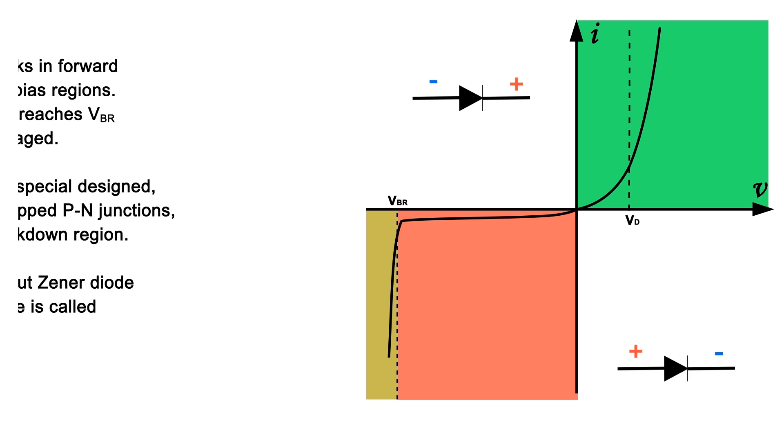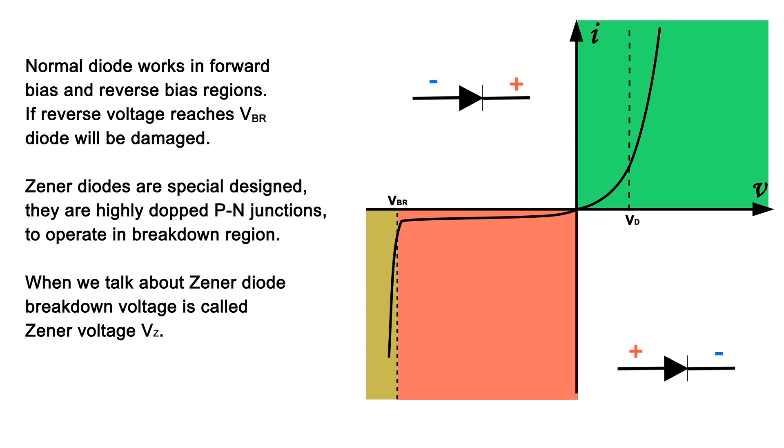Normal diode works in forward bias and reverse bias regions. If reverse voltage reaches Vbr, the diode will be damaged. Zener diodes are specially designed - they are highly doped P-N junctions to operate in breakdown region. When we talk about Zener diode, breakdown voltage is called Zener voltage Vz.